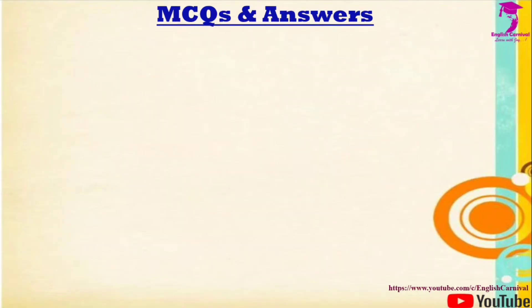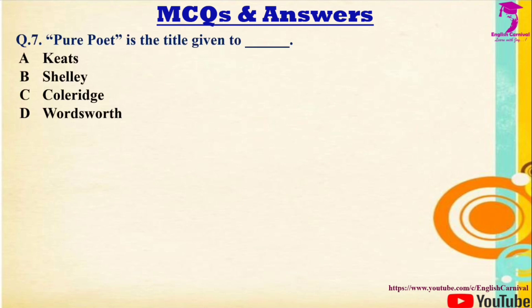Question 7: 'Pure Poet' is the title given to — Options: A) Keats, B) Shelley, C) Coleridge, D) Wordsworth. Correct answer is A — Keats.